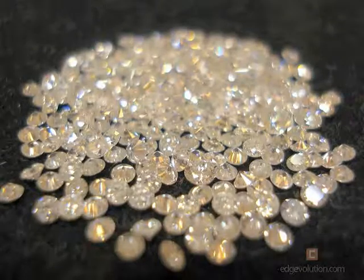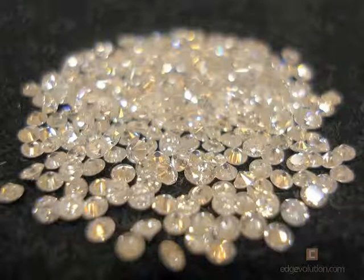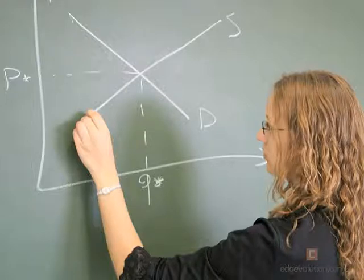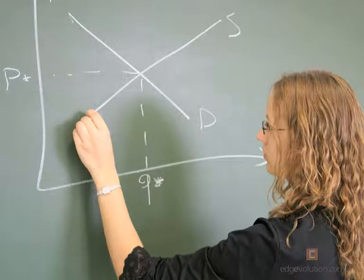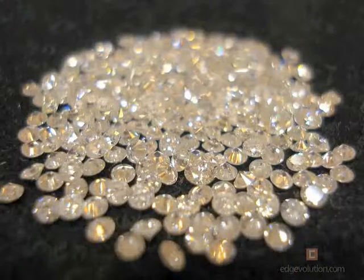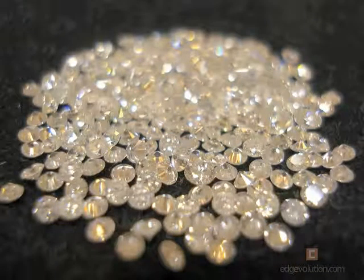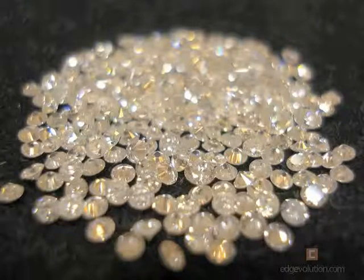Now everybody knows that diamonds are expensive, but why? It's all about supply and demand — Economics 101. When the supply of an item is low, demand grows. A byproduct of that increased demand is an increase to the price. When you see high demand, you typically see high prices as well. Diamond companies know this and keep supply levels low, thereby increasing demand for diamonds, and with that increased demand comes higher diamond prices — they are artificially keeping diamond prices high.